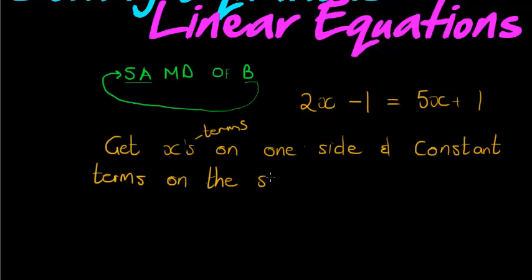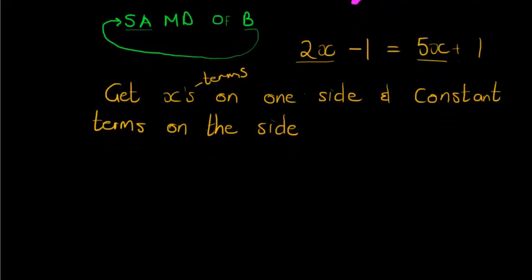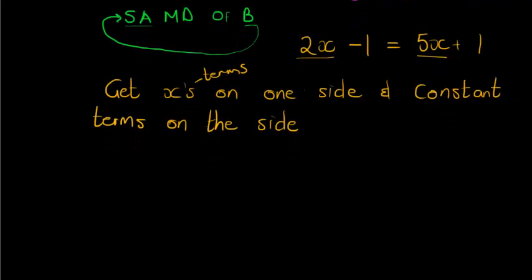Doesn't matter which side you choose for your x's and constants. Usually, people choose the side that should have the x's as the one that already has the most. So for example, in this example, there's five x's on the right hand side. So it just makes sense to get rid of this term on this side and take it to that side. Let's go and see how we would do that for this specific example.